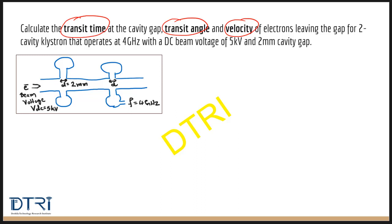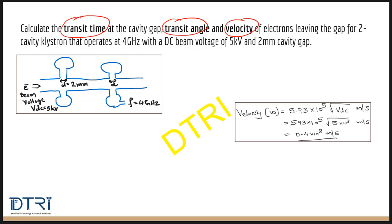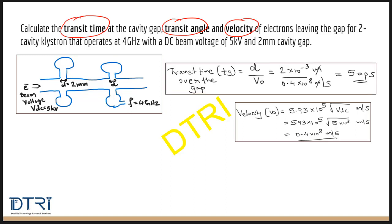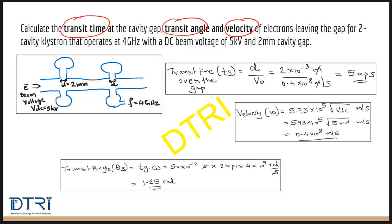Now, use the equations and do the calculations as shown here. This is the equation and the final value for the velocity. This is the equation for the transit time over the gap and the value. This is the equation for the transit angle and the final value.